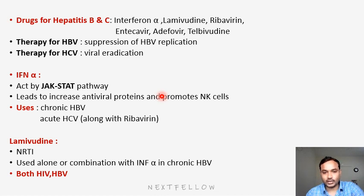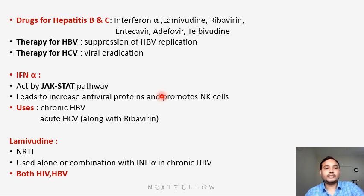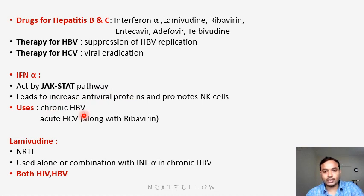These NK cells will inhibit or kill the viral particle — HBV virus. Thereby it will suppress the count of hepatitis B virus replication. These drugs are useful in chronic hepatitis B and acute hepatitis C virus — hepatitis B in chronic condition, hepatitis C in acute condition, along with ribavirin.